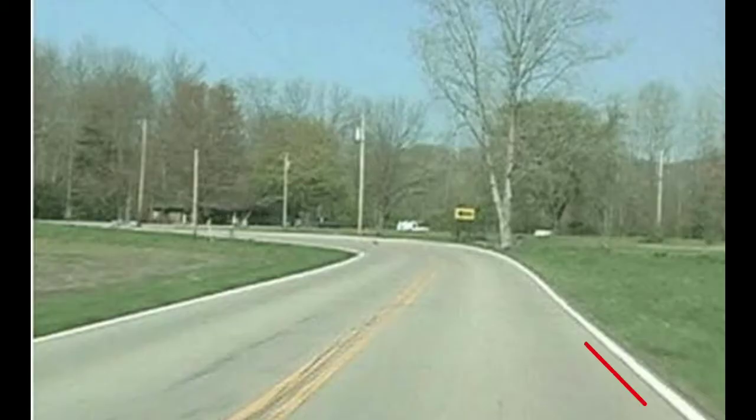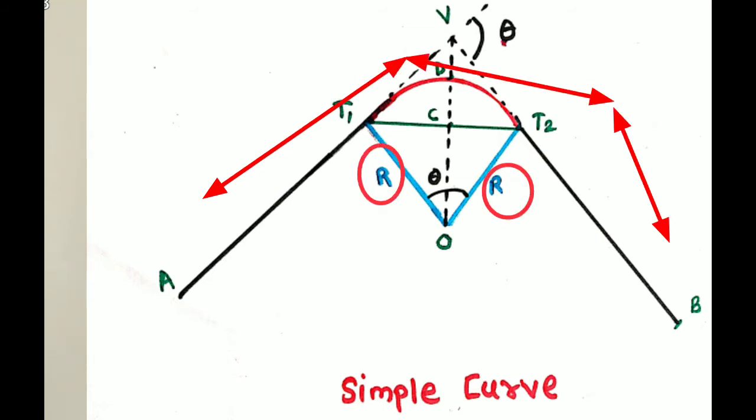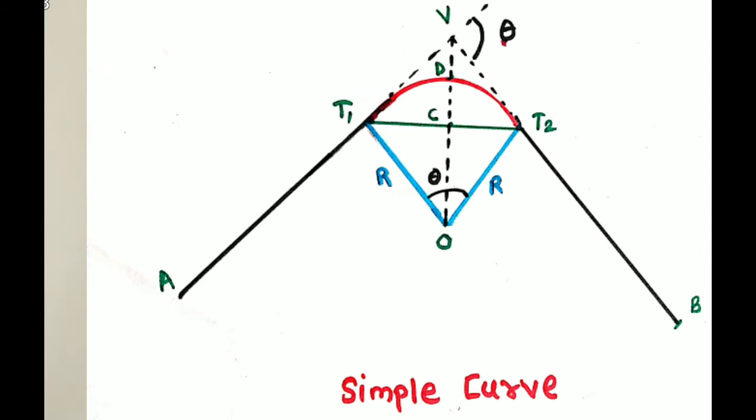Now let us see about the horizontal curve. The curves which are provided on the horizontal plane in order to change the direction of the road or railway track are known as horizontal curves. Horizontal curves are provided for the safety and comfort of passengers. The first type is the simple curve — when a single arc is provided having only one radius, that type of curve is known as a simple circular curve.